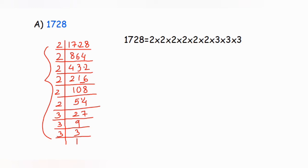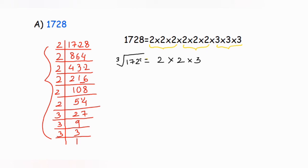The next step is to pair the prime factors into groups of three (triples). We get one group of three twos, a second group of three twos, and one group of three threes. From each group we take one number: one 2, one 2, and one 3. So the cube root of 1728 = 2 × 2 × 3 = 12. If you multiply 12 three times, you get 1728.